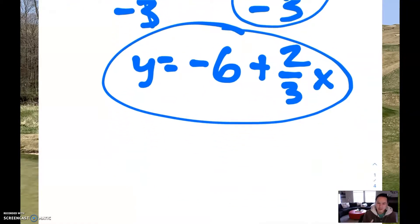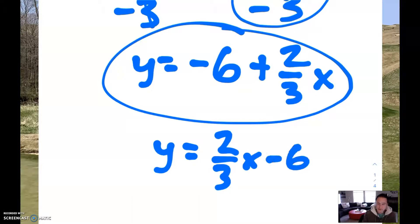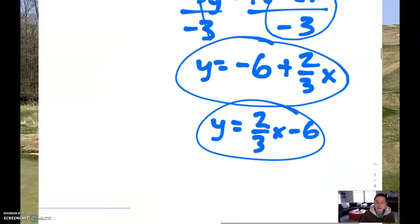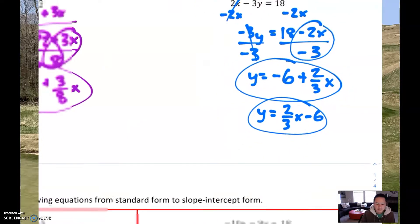Now you might be thinking, I thought the x's come first. Sure, you can rewrite it as 2/3 x minus 6 if you're more comfortable with it — this is the exact same thing. The order that you write them in doesn't necessarily matter, especially with linear functions. Later on when you get to higher-level math, yes, the order is going to matter a little bit more, but for linear functions you can kind of see them both right away.